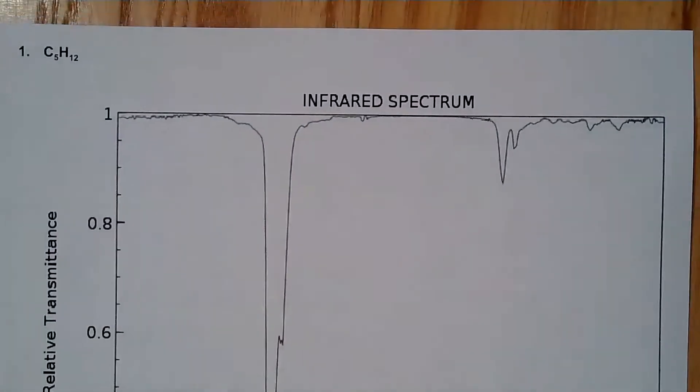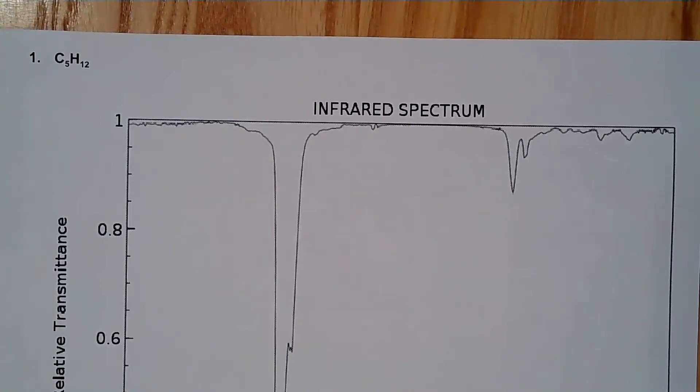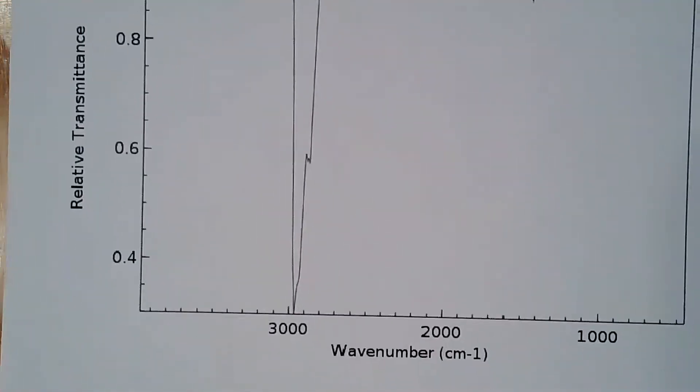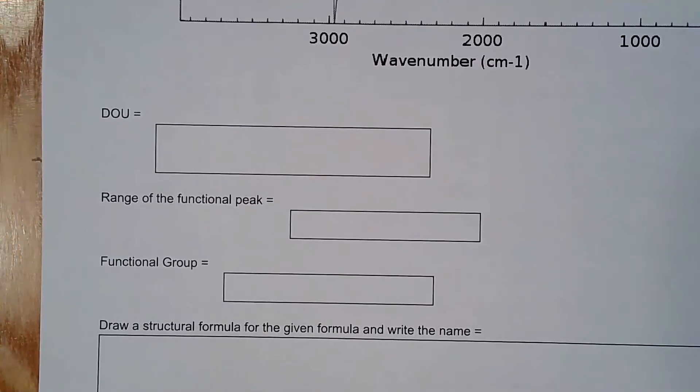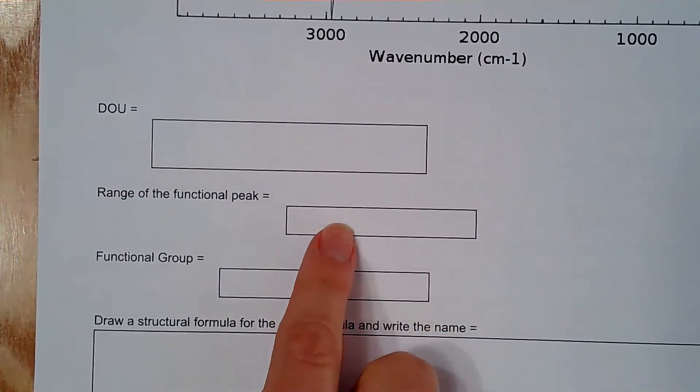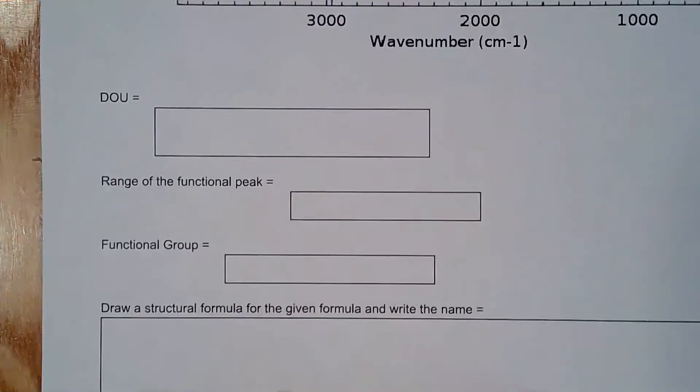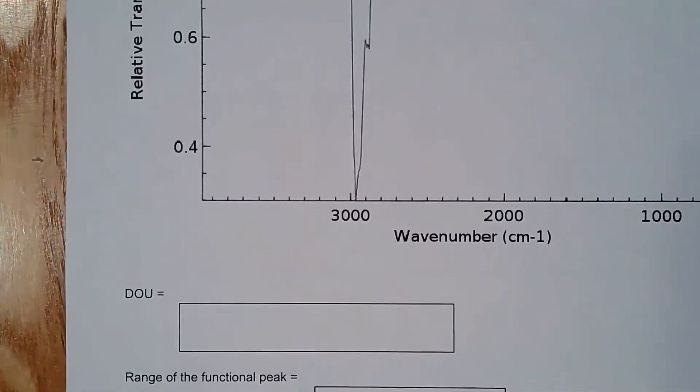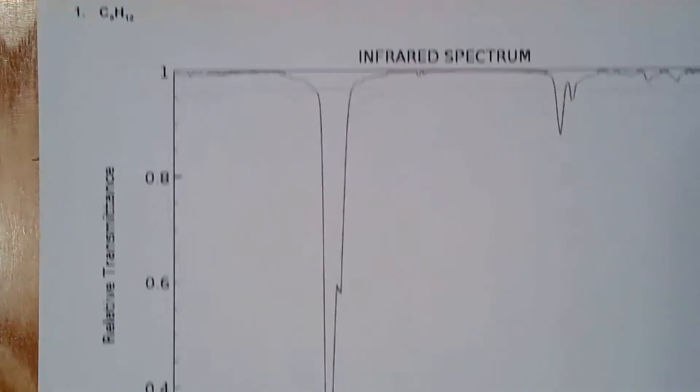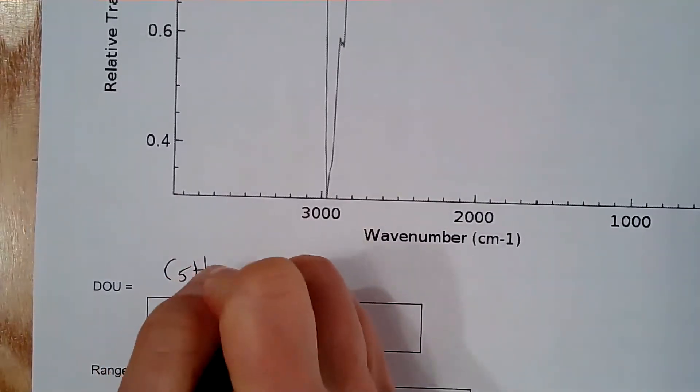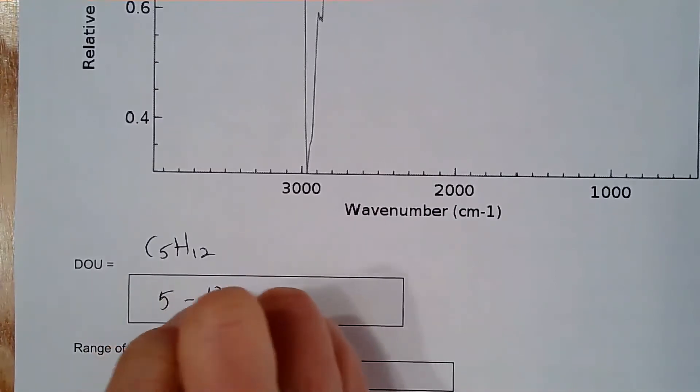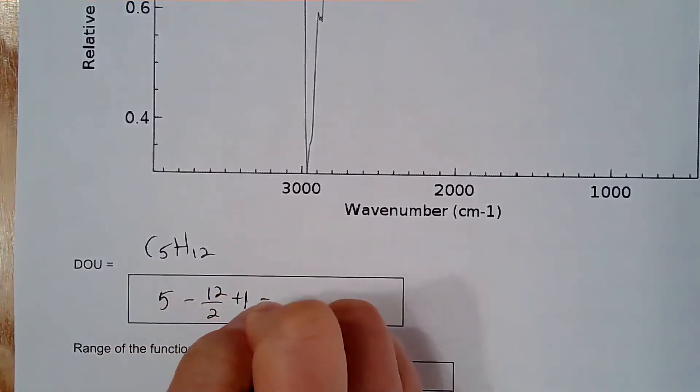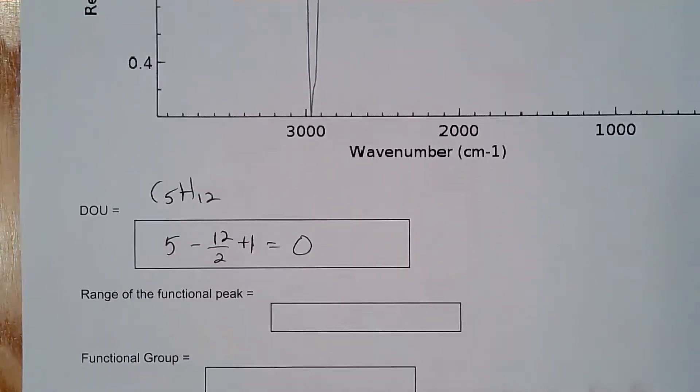So if you would go to the first problem, what you're doing on each one of these is taking the formula. So this is C5H12. You're looking at the IR and then you're trying to do the degree of unsaturation, range of what they call the functional peak, what's the most important peak here, what's the functional group, and then can you draw it and write the name? So my degree of unsaturation is going to be 5 minus 12 over 2 plus 1. So that's going to give me a degree of unsaturation of 0.